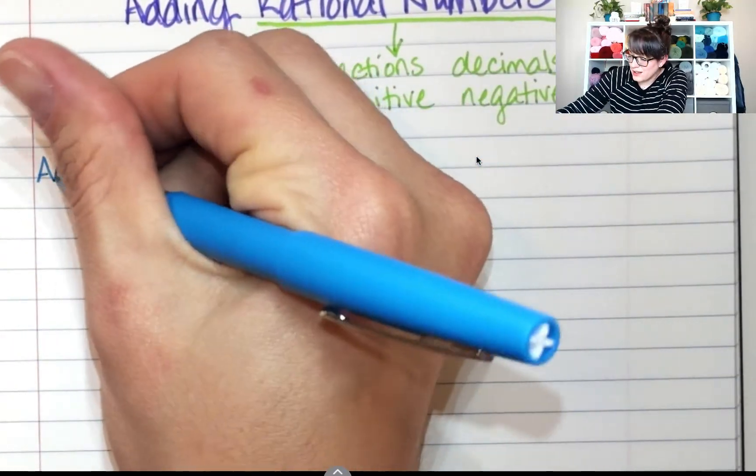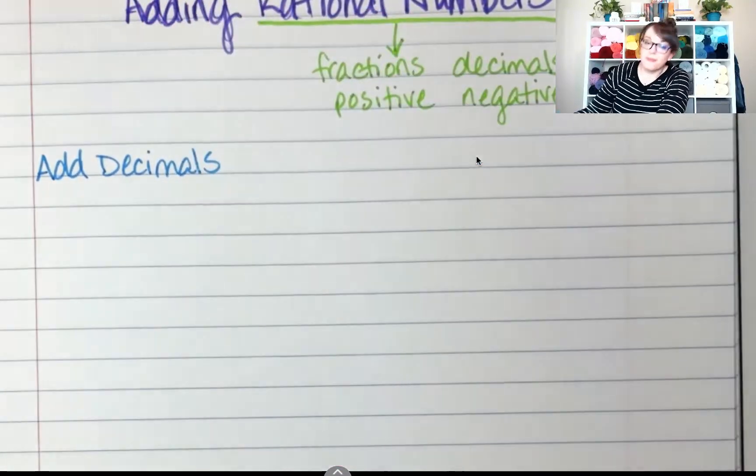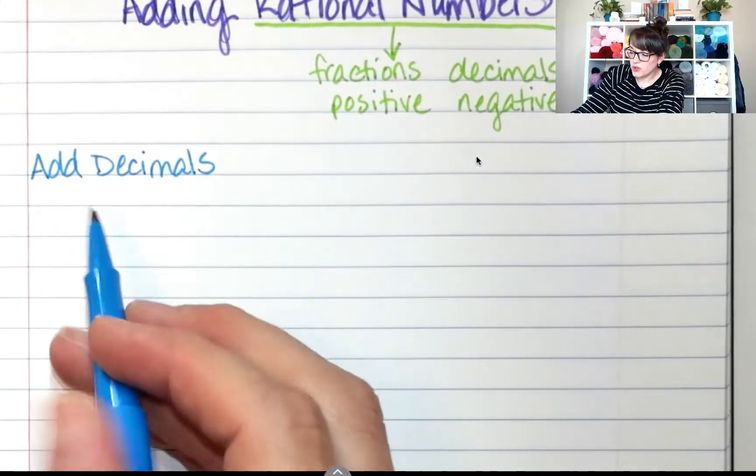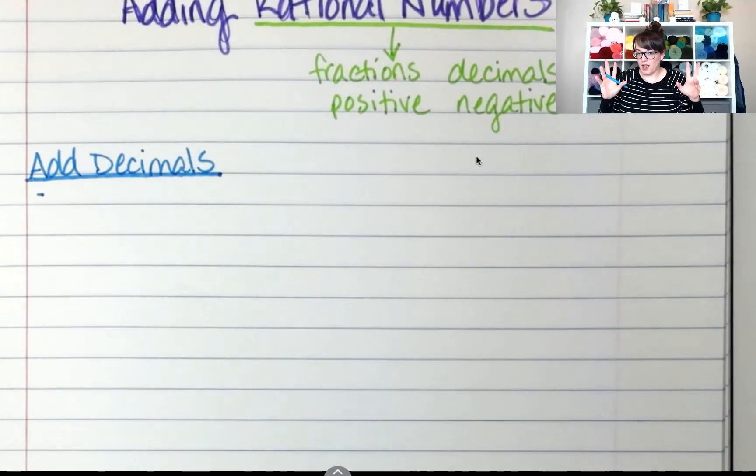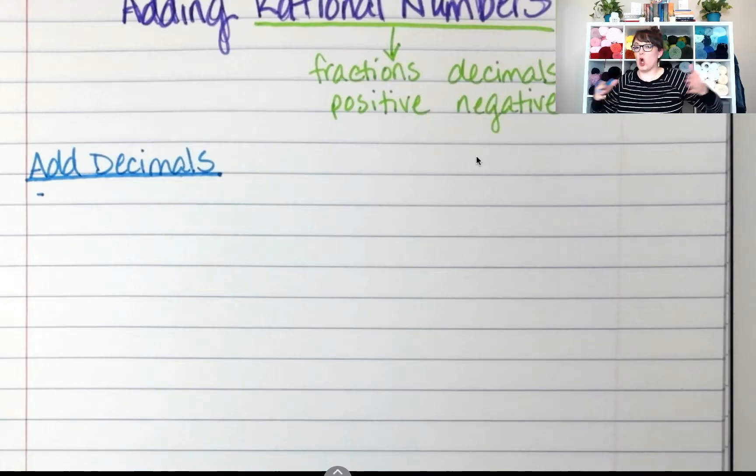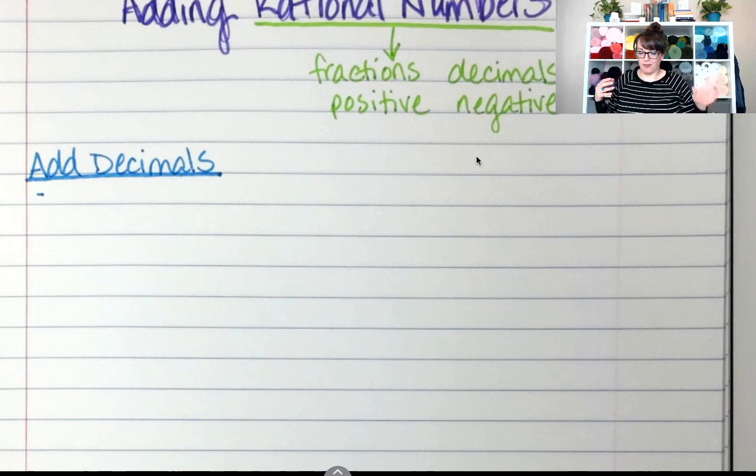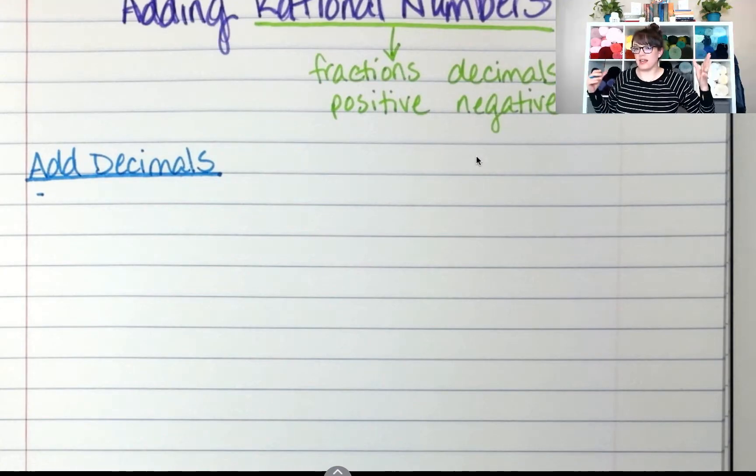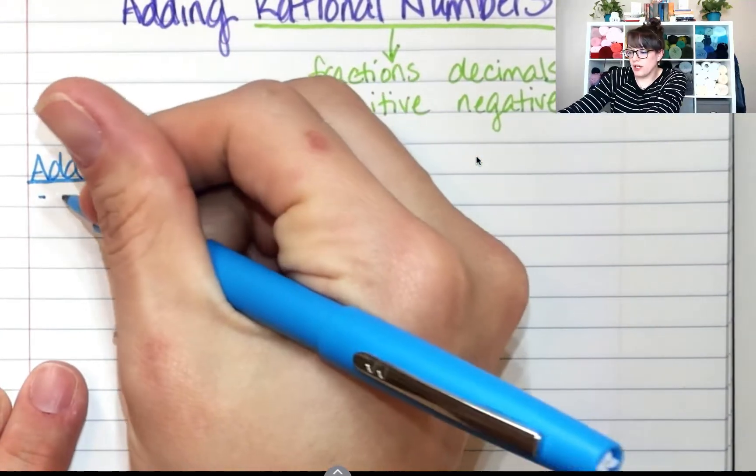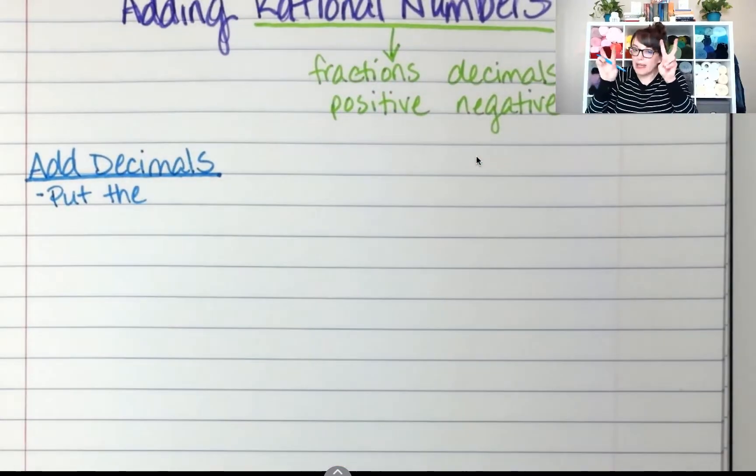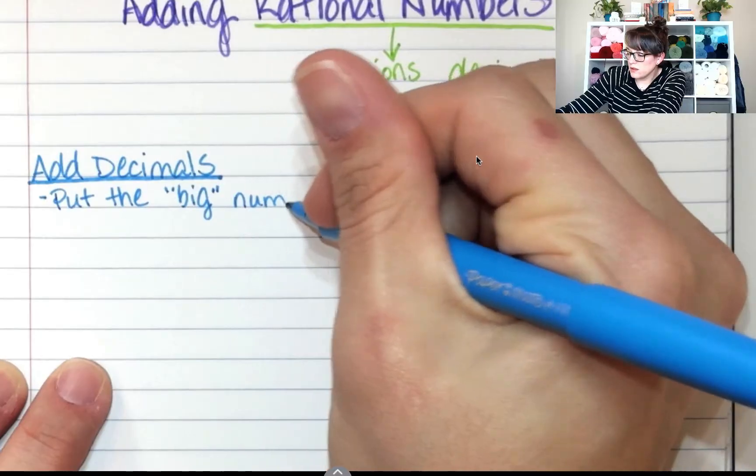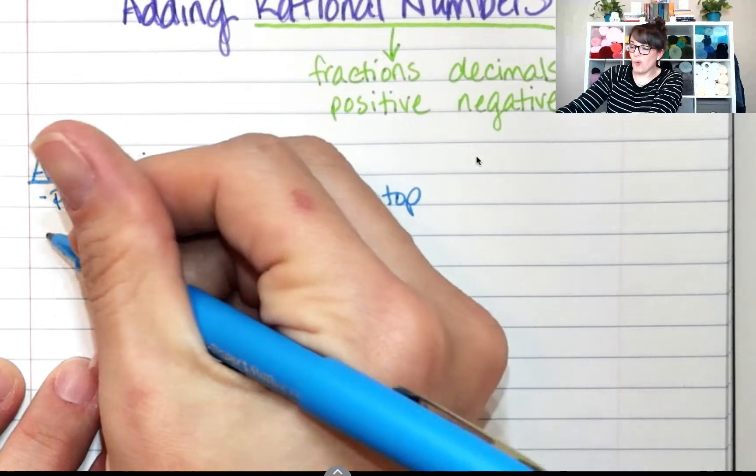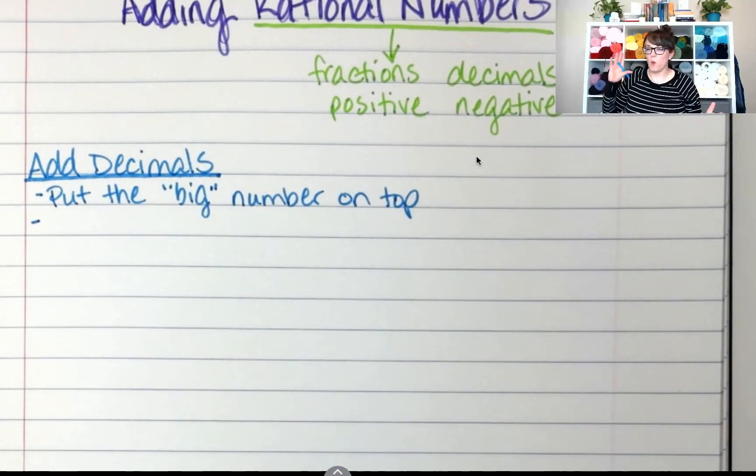When we add decimals that are positive or negative, we have to treat these decimals like regular numbers. We're going to find the bigger number. And when I say bigger number, I don't mean long number. I mean the biggest valued number, positive or negative, which one has the most amount of stuff. So like negative 1,000 is bigger than negative 1.0005. So we're going to put the larger or biggest on top.